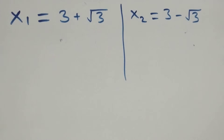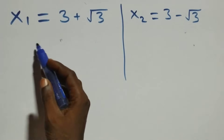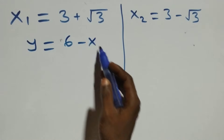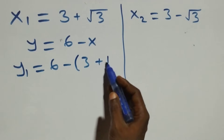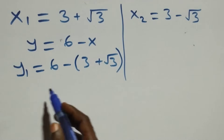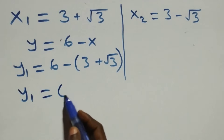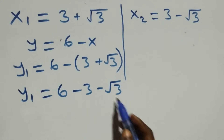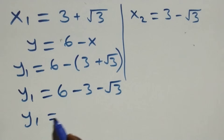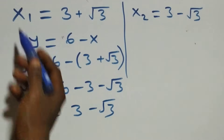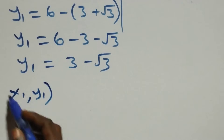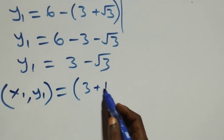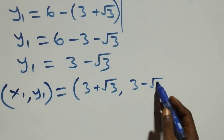To find the corresponding values of y, we use equation three: y equals 6 minus x. For y1, we substitute x1: y1 equals 6 minus (3 plus root 3), which gives y1 equals 6 minus 3 minus root 3, that is y1 equals 3 minus root 3. So the first solution pair is x1, y1 equals (3 plus root 3, 3 minus root 3).